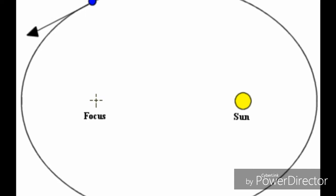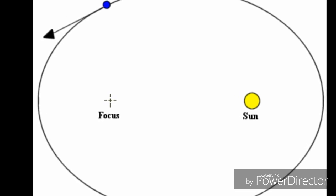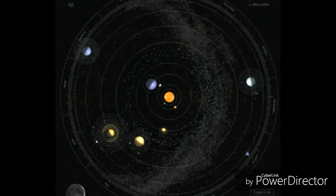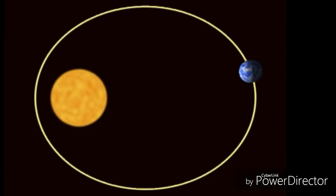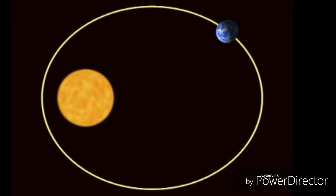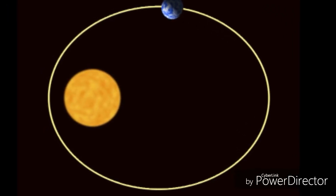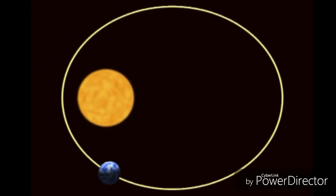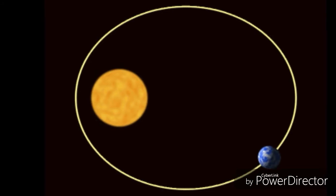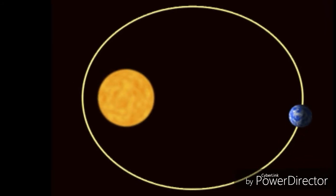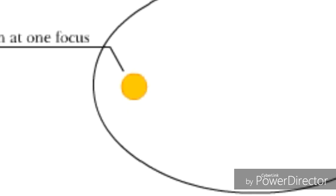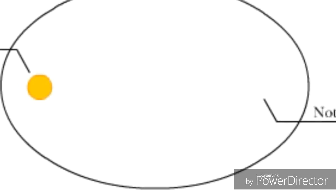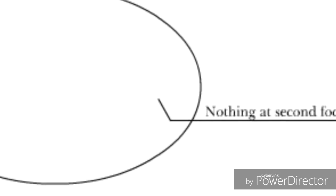Kepler's first law, also called the law of ellipses, explains that planets orbit the sun in a path described as an ellipse. All planets orbit the sun in a path that resembles an ellipse with the sun being located at one of the foci of that ellipse — the foci being one of the center points of an ellipse.